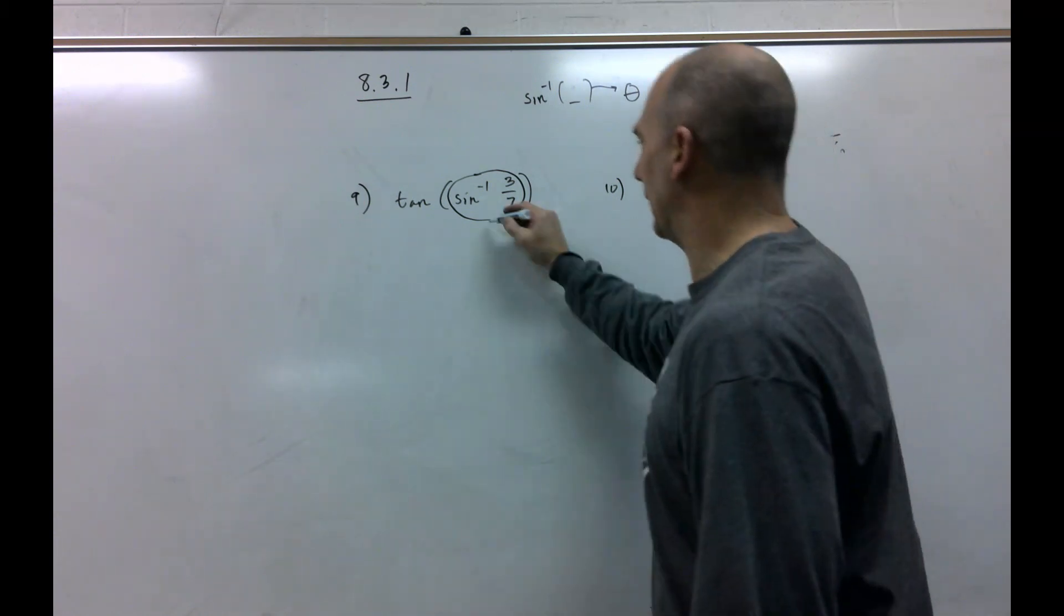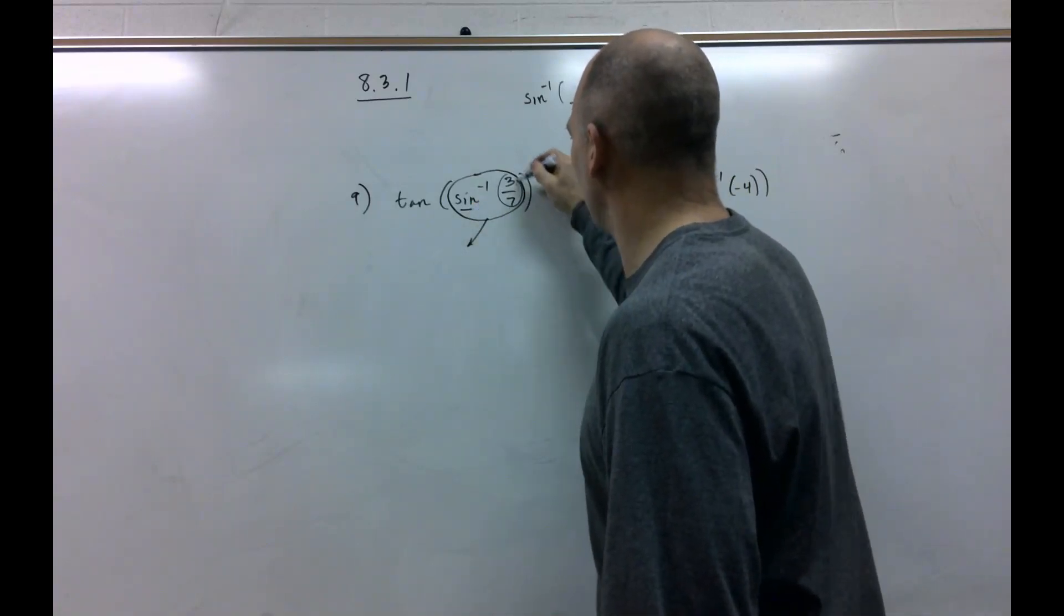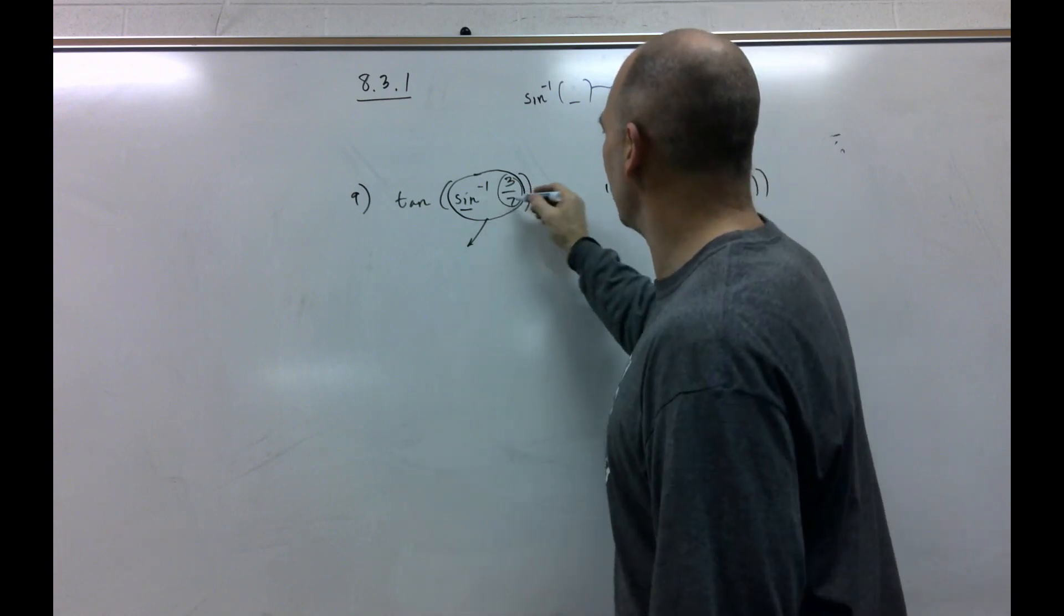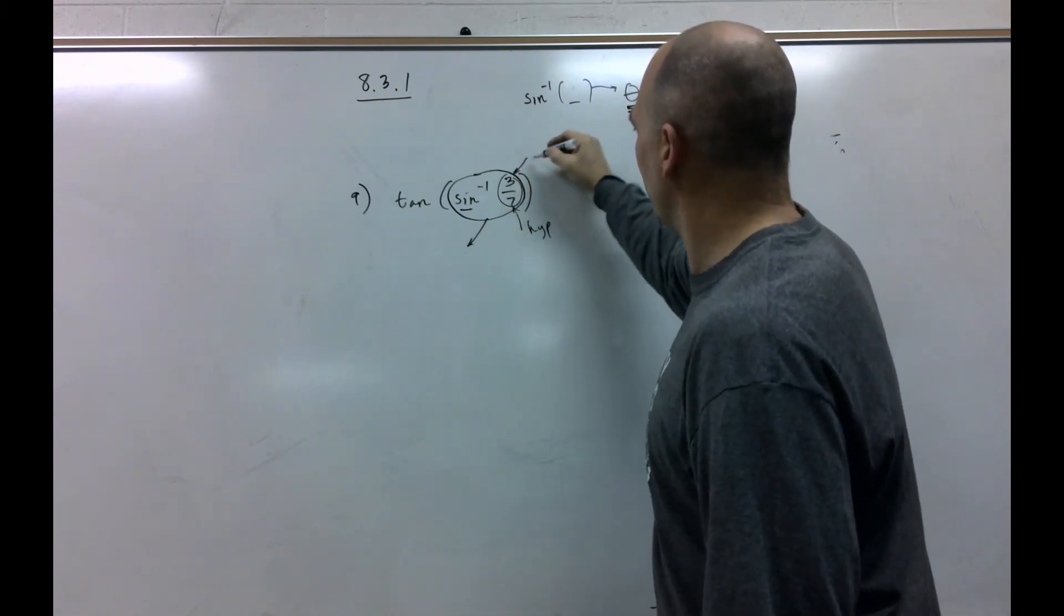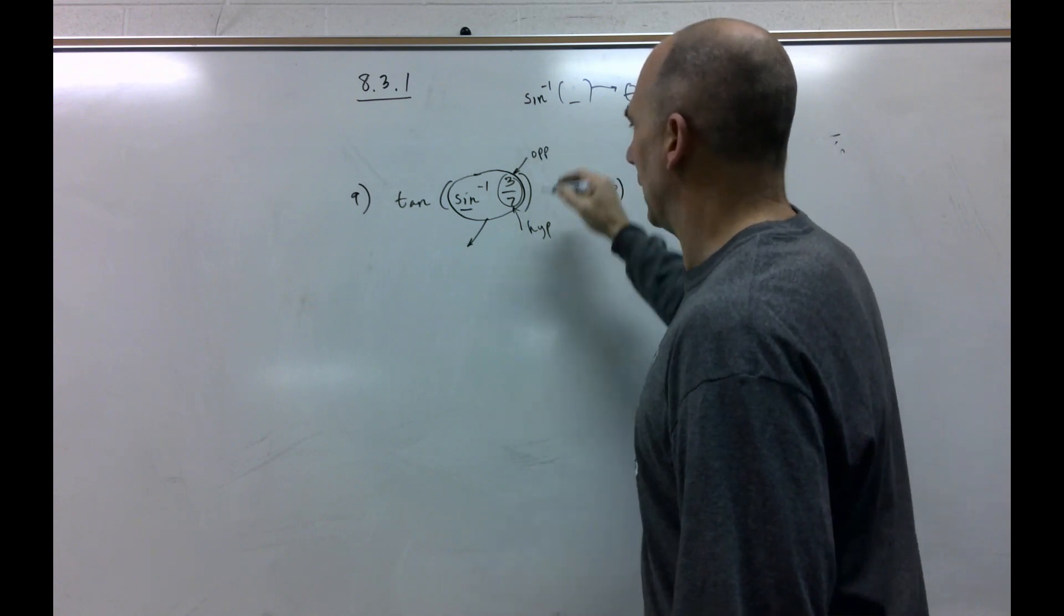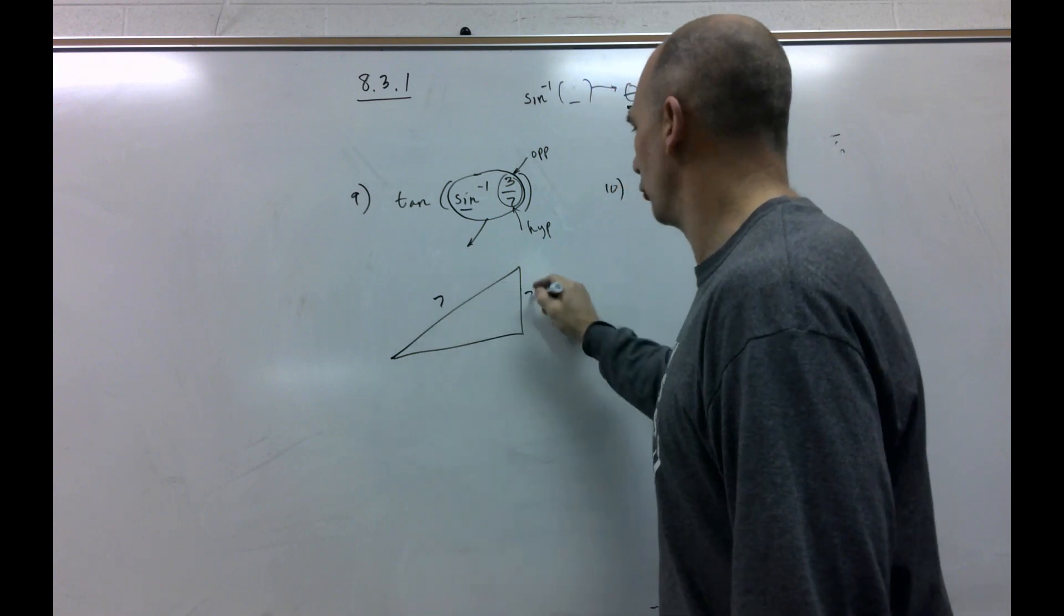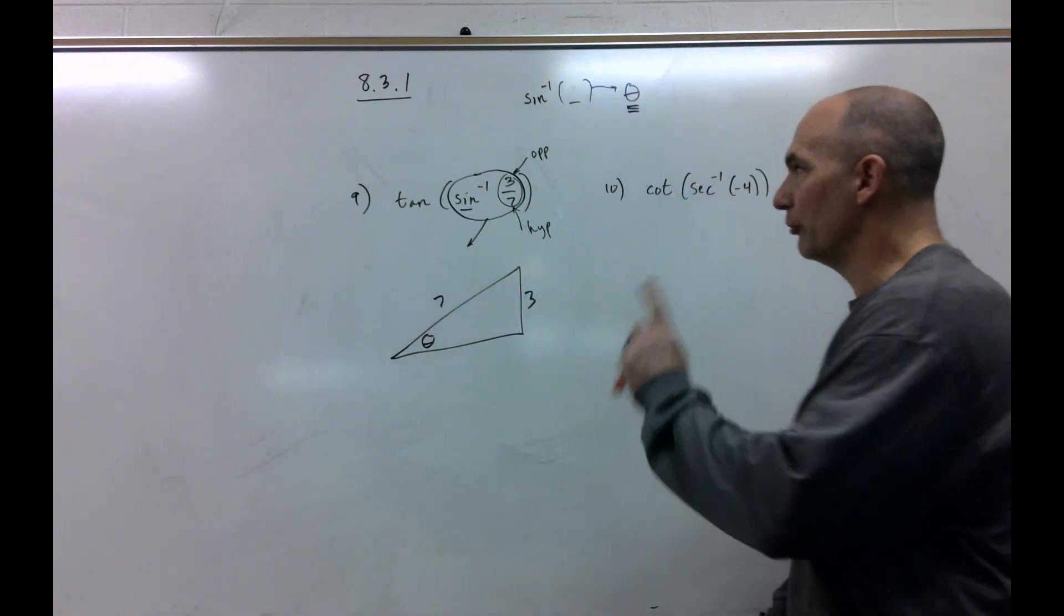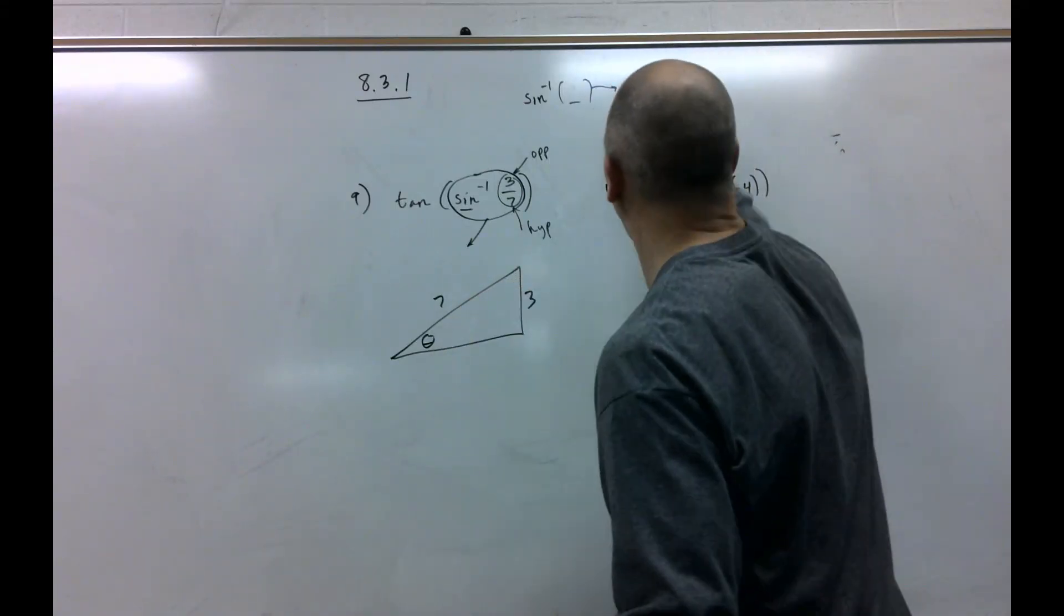What this is saying is, draw a triangle where sine equals three sevenths and identify what your theta is. So, if sine is three sevenths, we know this is our hypotenuse, we know this is our opposite and just start simple. Try to draw that situation. So, there's that situation.